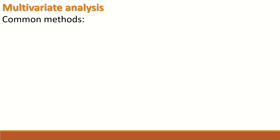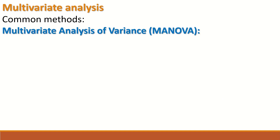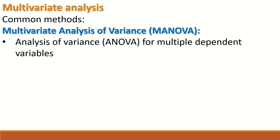Multivariate analysis common methods: one example is the multivariate analysis of variance, abbreviated as MANOVA. MANOVA stands for multivariate analysis of variance. It is analysis of variance — ANOVA — for data that have more than one dependent variable.